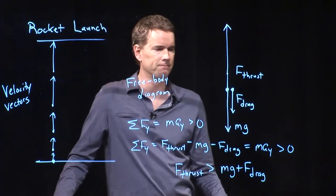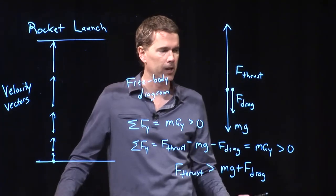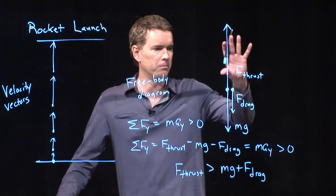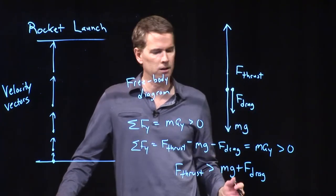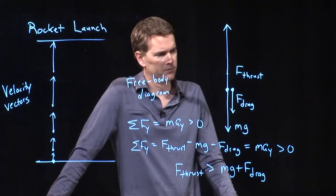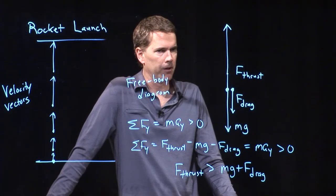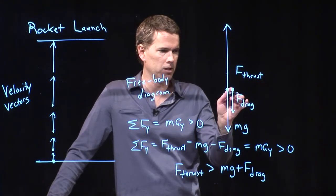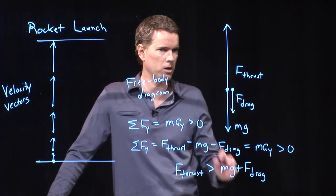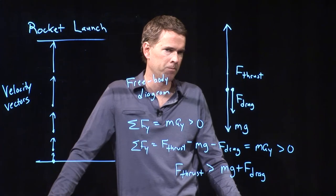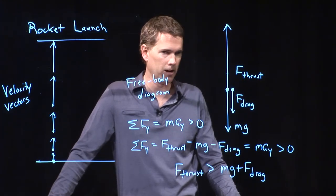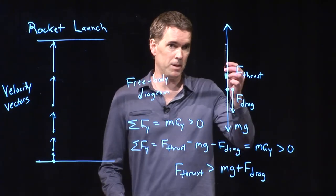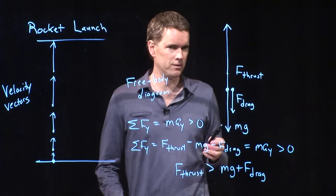So maybe something more like that. You can measure them out and see if we're right. If F thrust is bigger than both of those things, then it will accelerate upwards. What if F thrust is in fact equal to mg plus F drag? It would be at constant speed — acceleration would be zero. That would be what we might call terminal speed for the launch.